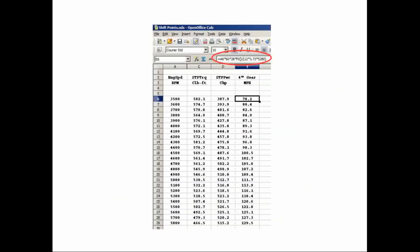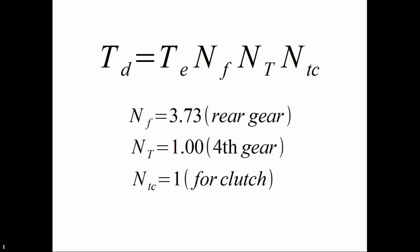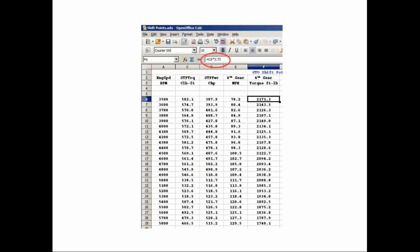Next, we need the drive wheel torque in 4th gear. Since 4th gear is a 1 to 1 ratio and we have a clutch, we only need to multiply the engine torque by the final drive ratio, which for my car is 3.73 to 1. So, we add another column where we take all column B values and multiply by 3.73. Next, we can add in the speed and torque columns for 3rd, 2nd, and 1st gears using the previous formulas to fill out our spreadsheet.